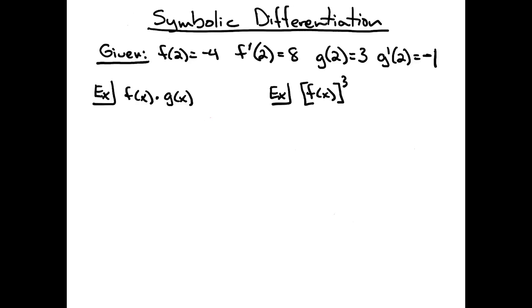They're going to ask you to calculate the derivative at x equals 2. So in this first example, I've got f of x times g of x. So I'm going to need to calculate the derivative symbolically first, and then find that derivative at x equals 2.